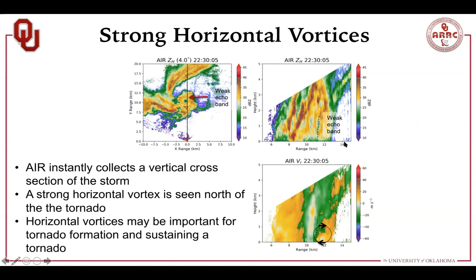Another interesting observation we've seen is strong horizontal vortices. One of the cool things about the AIR is it gets a vertical snapshot of the whole column all at the same time. In this cross-sectional view of reflectivity, red areas indicate heavier precipitation or larger particles. Looking at the Doppler velocities, there are really strong winds from the tornado, but just past that there's a rotating feature in the horizontal — winds coming toward the radar at one level and then winds moving away really quickly at about one kilometer. These horizontal vortices may be important for tornado genesis and also for sustaining a tornado. We see this in very close proximity to the tornado, and one thing we're going to look at is whether that vortex gets tilted up into the tornado somehow.